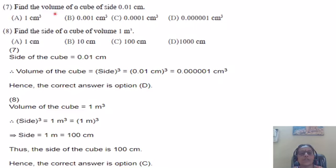Question number 7. Find the volume of a cube of side 0.01 centimetre. Four options are given to you. Side of the cube is given 0.01 centimetre. Formula for volume of the cube we have studied: side cube. So, substitute that and find out its cube. So, it is 0.0001 centimetre cube. So, correct alternative is option D.